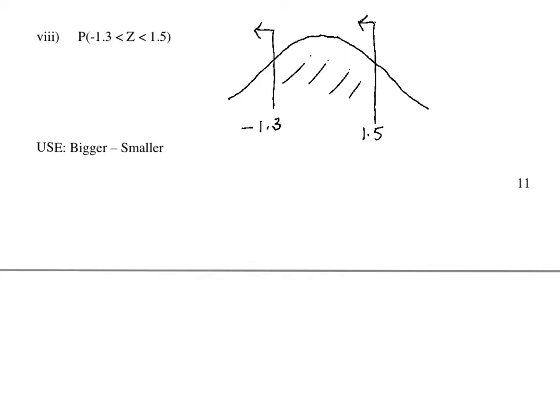What that means is finding the chance that an observation would fall 1.3 standard deviations below the mean of 0 to 1.5 standard deviations above the mean of 0.